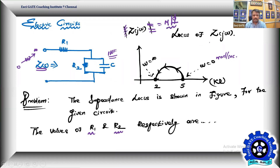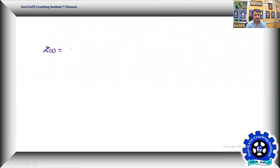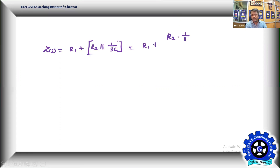For the given network, we have R1 in series with the parallel combination of R2 and C. So Z(s) equals R1 plus R2 parallel with 1/(sC). The parallel combination of R2 and 1/(sC) gives R2·(1/sC) divided by (R2 + 1/sC).